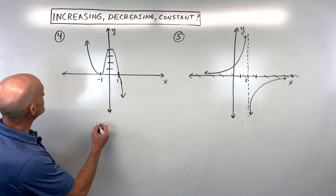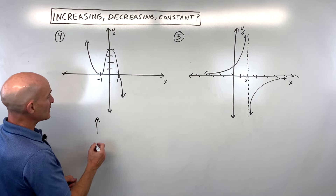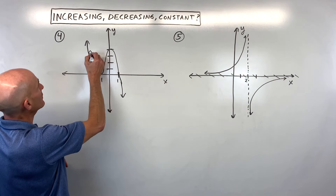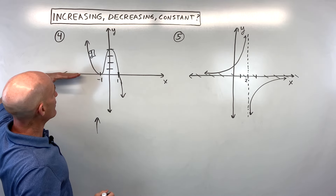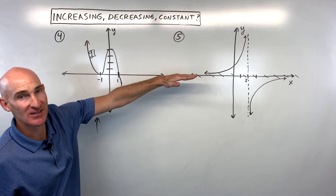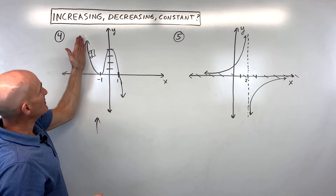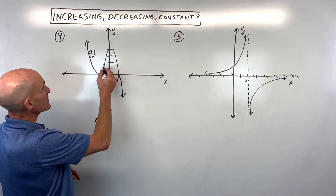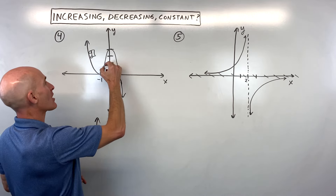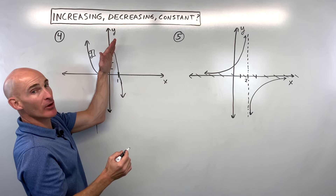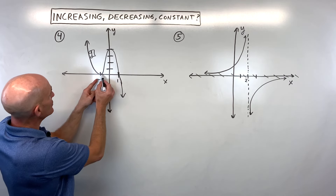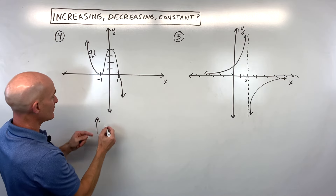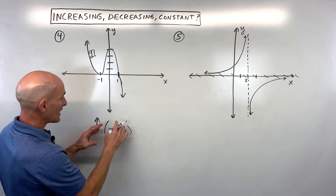For number four, another analogy that might help is to imagine you're driving a car from left to right across the graph. You can see it's going downhill — that's decreasing. Here the car is going up to the right, like going uphill — that's increasing, like a roller coaster. So it looks like it's increasing from negative one to zero. For what x values are the y values going up? That's from negative one to zero. Remember, open intervals.